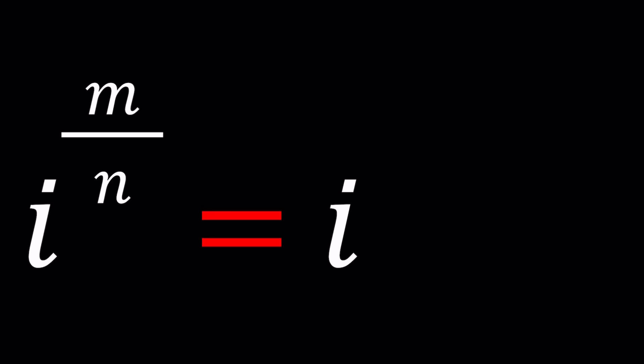But what is m and n? Well, m and n are integers. We're going to be looking for integer values for which this equation is always true. In other words, if you raise i to a fractional power, because m over n is a fraction, you get i.